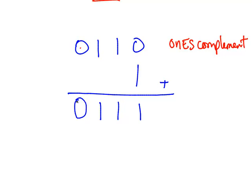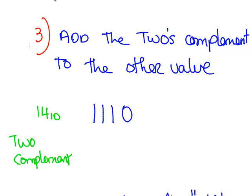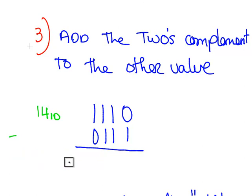The fundamentals of binary addition are quite important here. So what we do is add the 2's complement to the other value. The other value here was 14 — it's the larger value. And the 2's complement was 0, 1, 1, 1. So let's add the main number to the 2's complement.